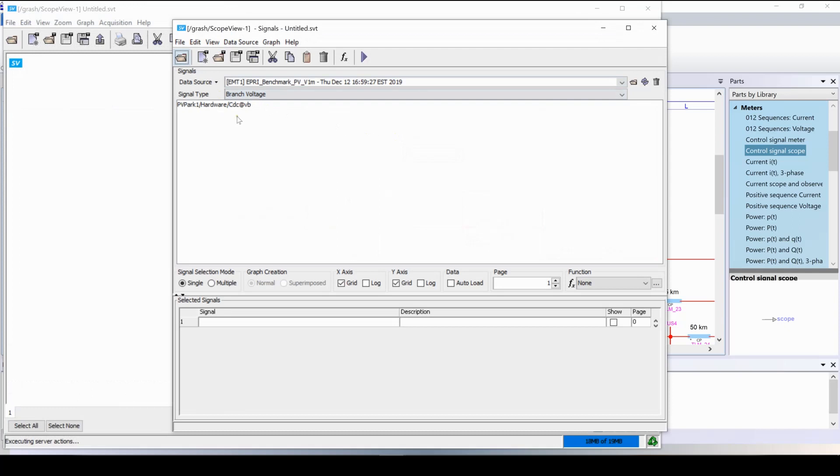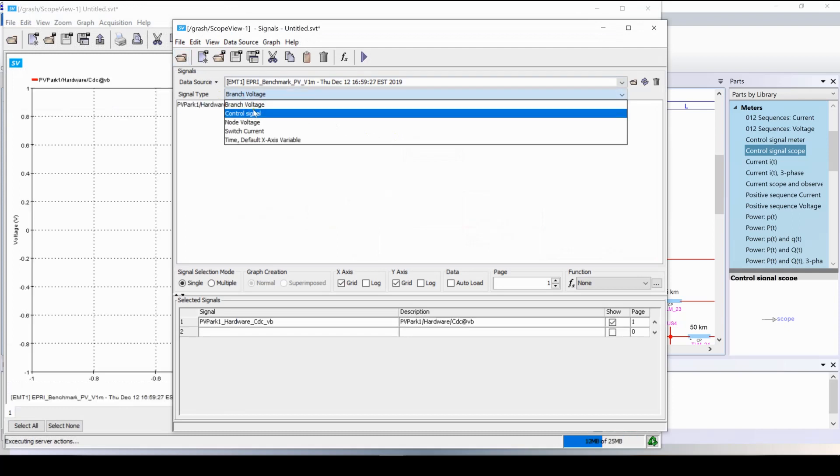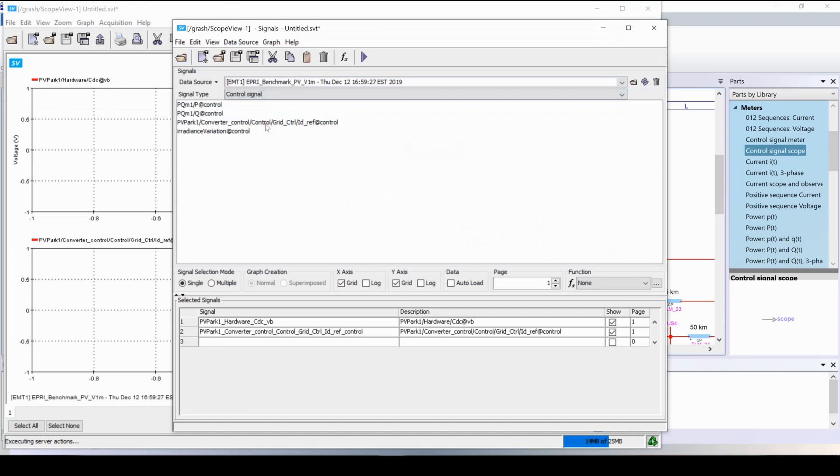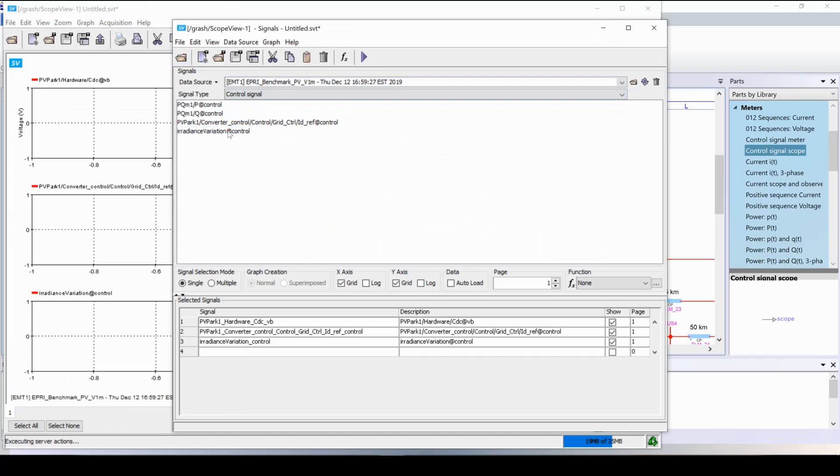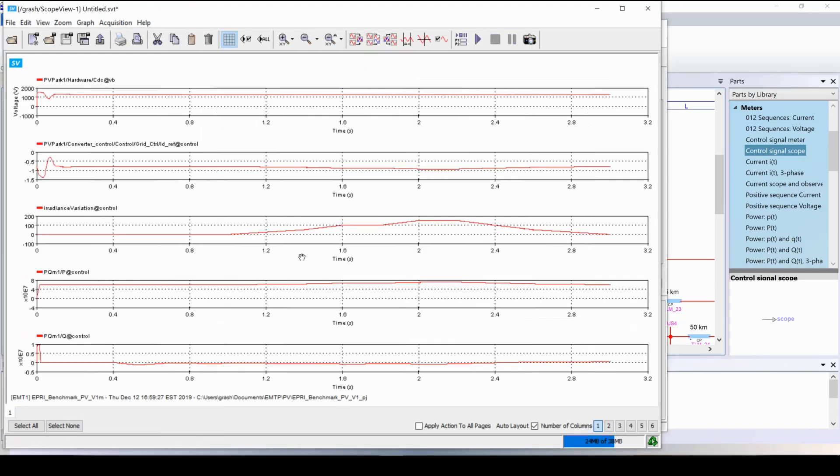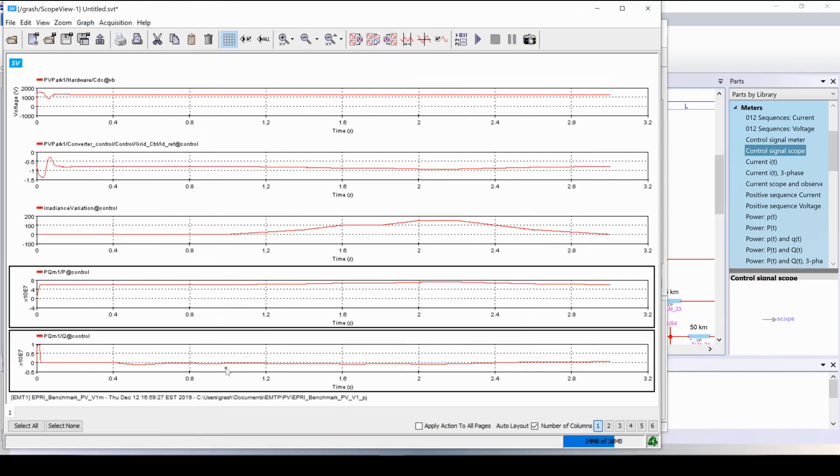The result will be visualized with scope view. The first scope here is the voltage across the DC bus. The second scope will be the d-axis current reference from the outer loop. The third one will be the irradiance variation. And finally we will see the power and reactive power generated by the park. Let's superimpose these two powers.